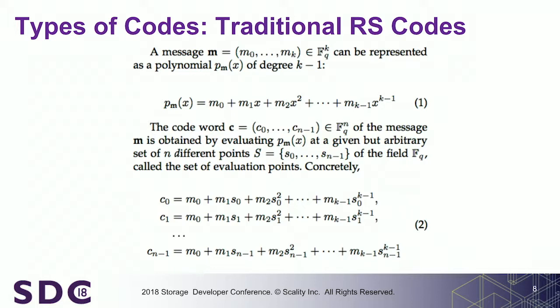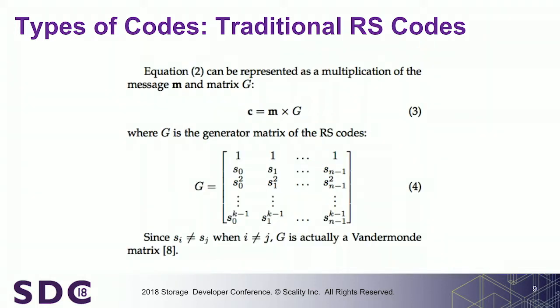We typically use a finite field to encode our message — a finite field F based upon a prime number Q, where K is the exponent of the prime number. We typically take 2 as the prime number because it's very convenient, and we define what we call a binary extension field. We encode our message using a polynomial on top of this finite field. To encode and generate a code, we take different random points in the field and apply equations, computing them via matrix multiplication. This is a typical operation — known in the field.